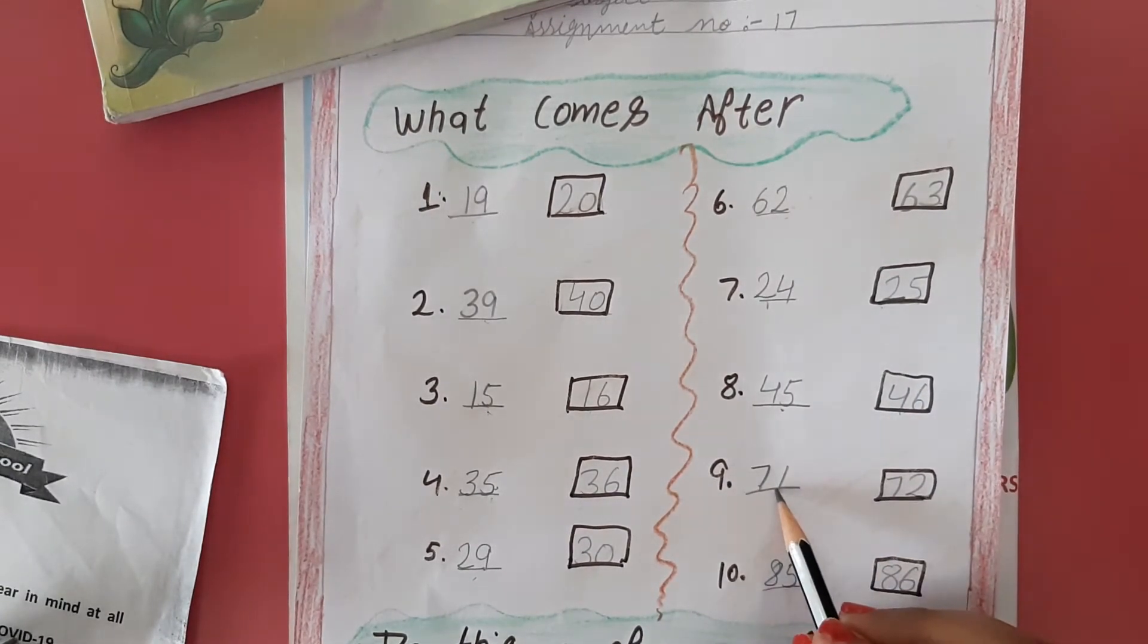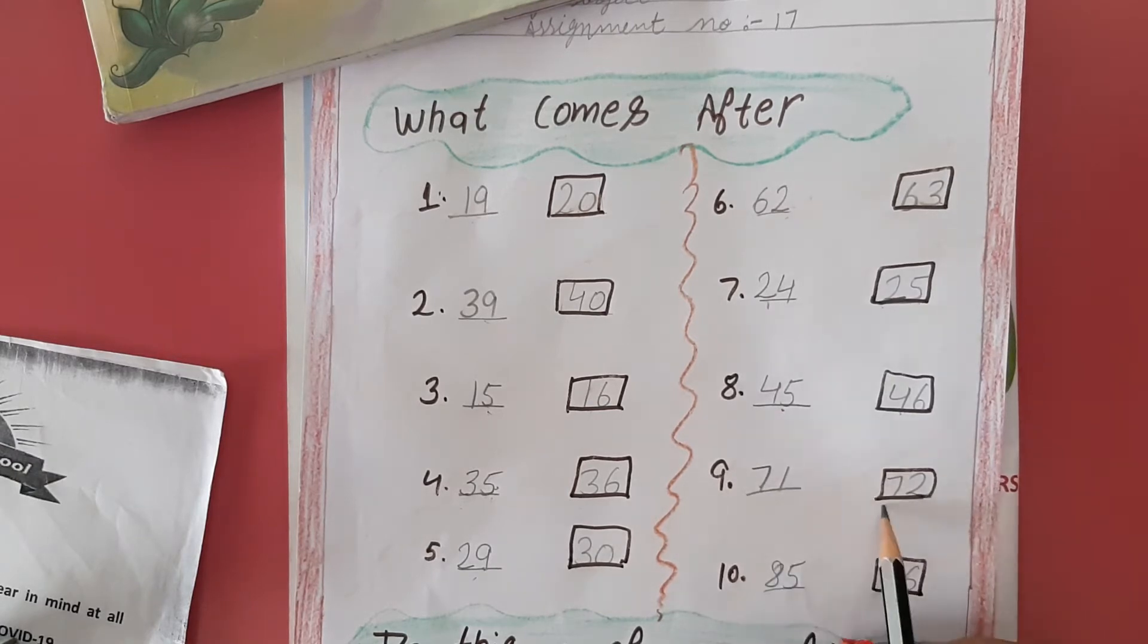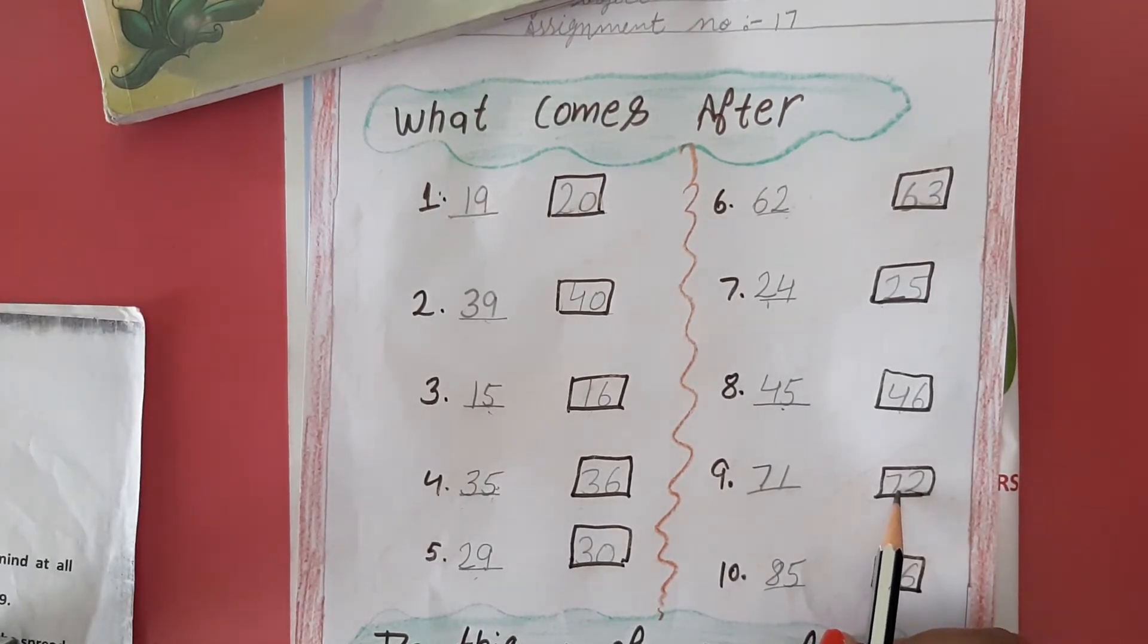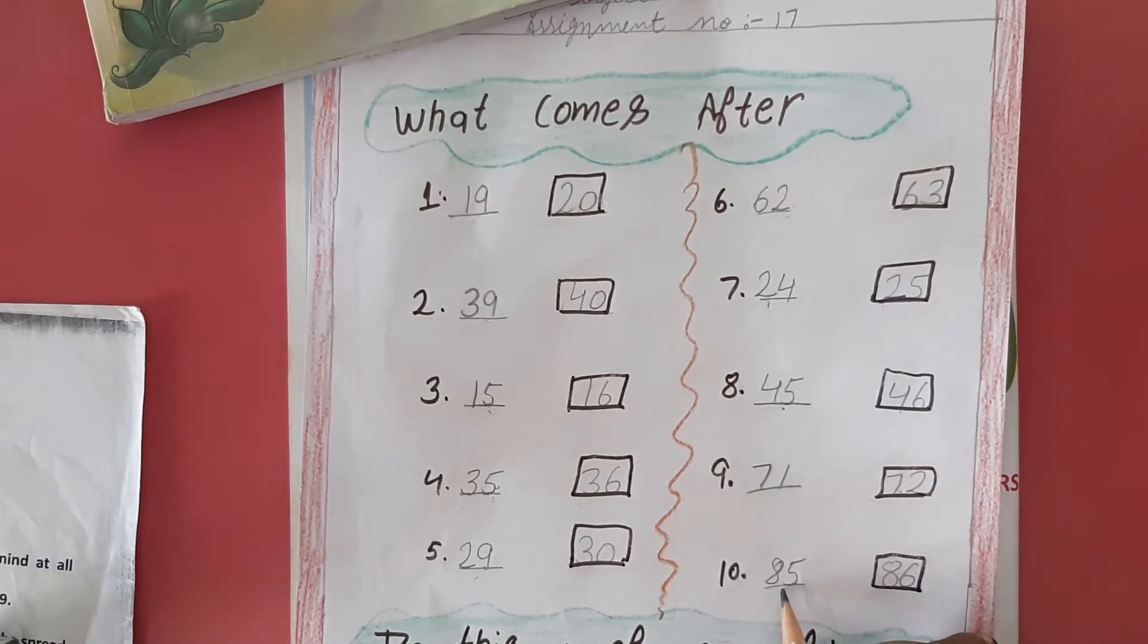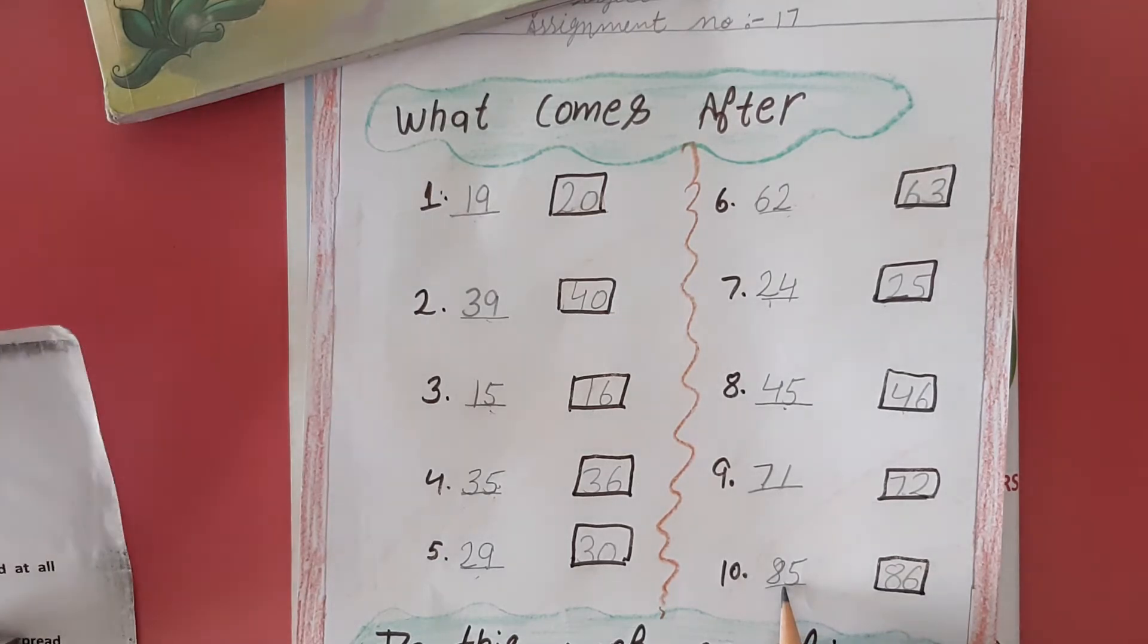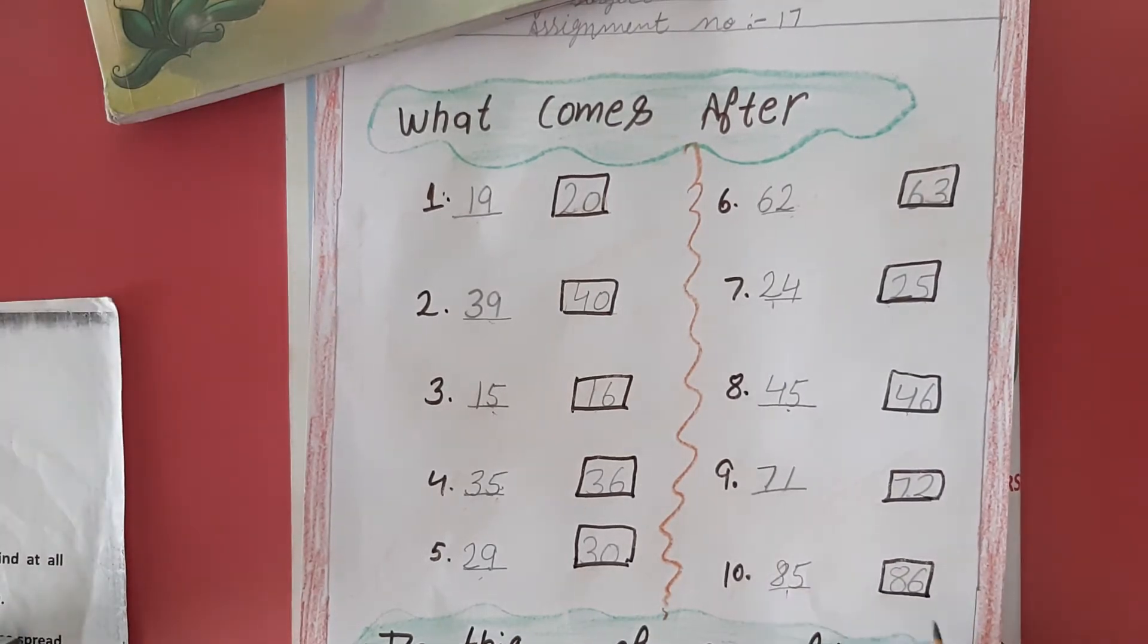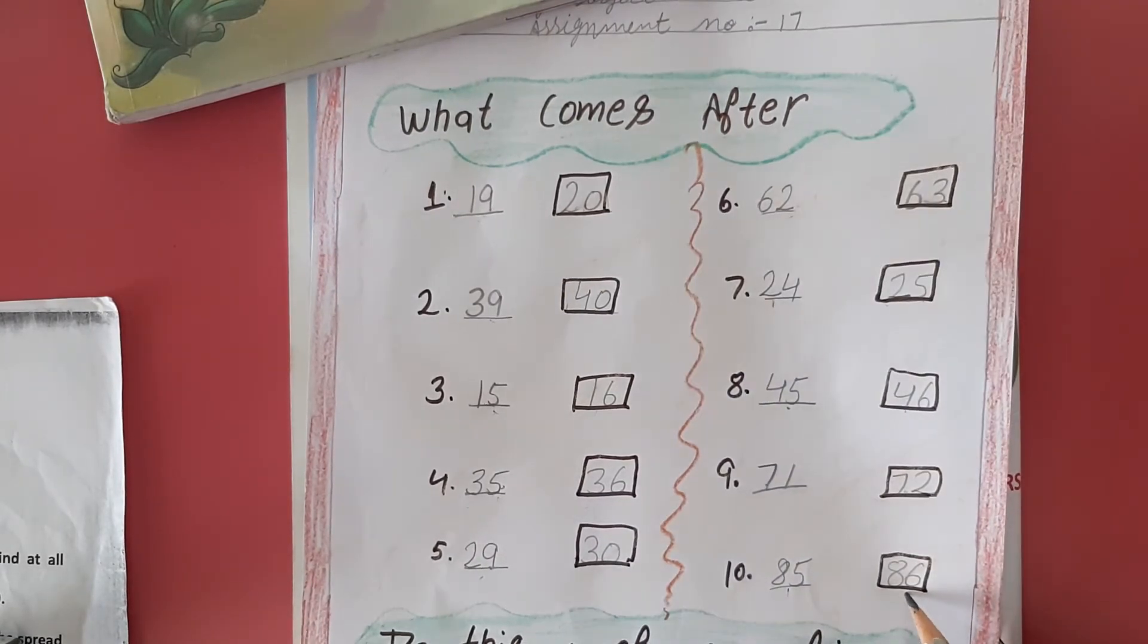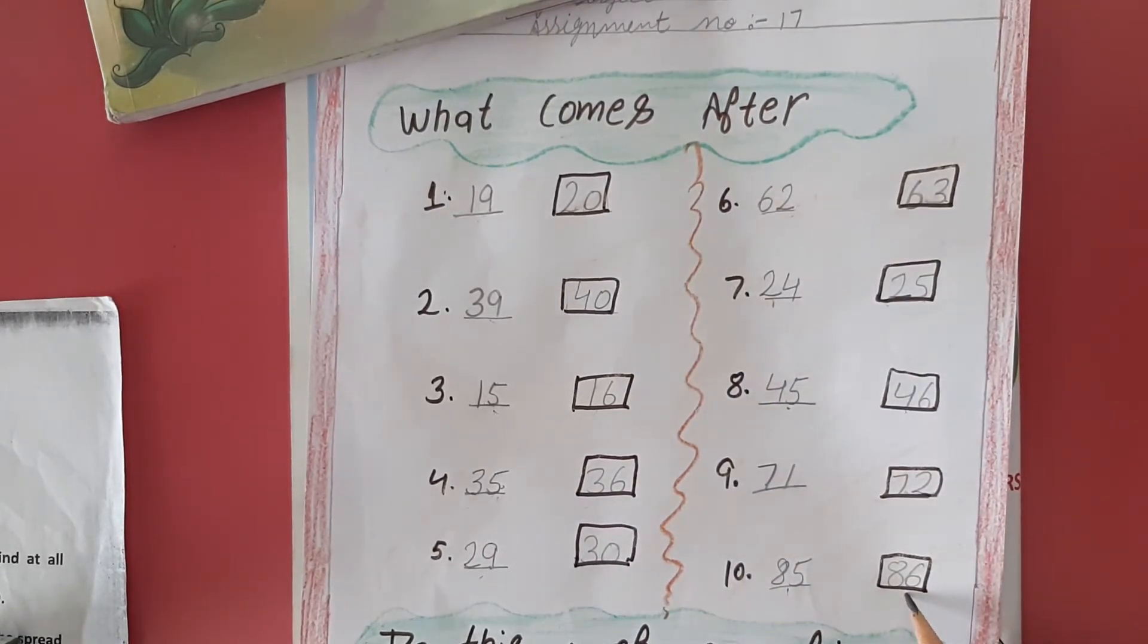71 is given here. What comes after 71? That is 72, so we will write 72 here. Next, 85 is given. What comes after 85? That is 86, so you have to write here 86.